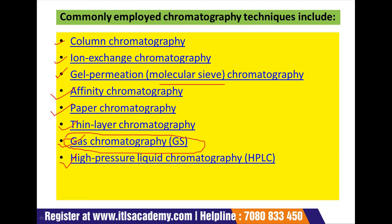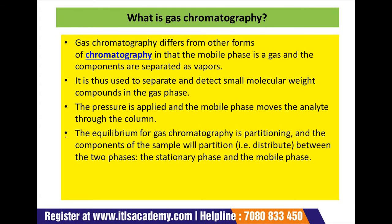So what is gas chromatography? Gas chromatography differs from other forms of chromatography in that the mobile phase is a gas, and the components are separated as vapors. It is thus used to separate and detect small molecular weight compounds in the gas phase. The sample is either a gas or a liquid that is vaporized in the injection port. The mobile phase in gas chromatography is a carrier gas — typically helium, because of its low molecular weight and chemical inertness. Pressure is applied and the mobile phase moves the analyte through the column.